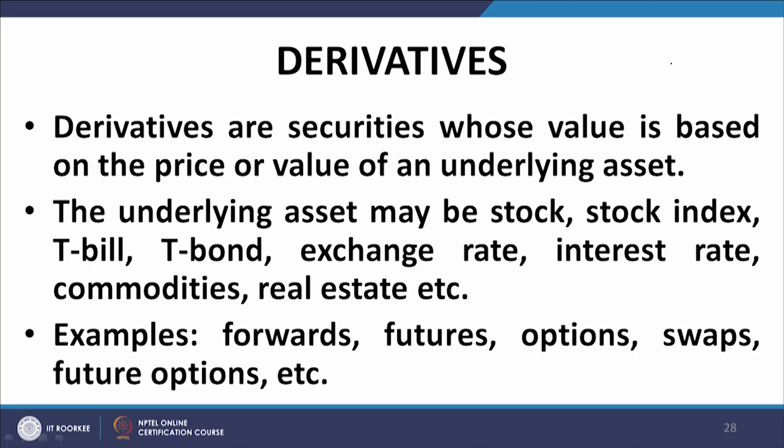The underlying asset may be shares, but it is not restricted to shares. We can have stock indices — for example, we have futures on Nifty, futures on S&P, Sensex. We can have interest rate derivatives, where the underlying instrument is treasury bills or treasury bonds. Exchange rates can be underlying instruments, as well as commodities, real estate, and so on. Derivative contracts have been written on literally everything under the sun.